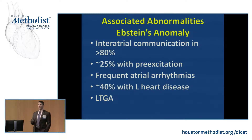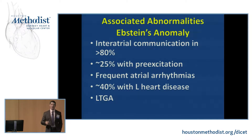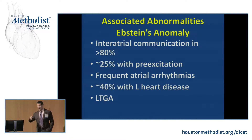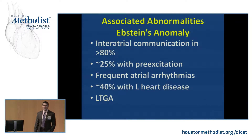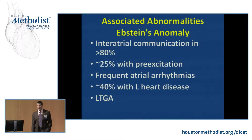In approximately 40% of cases, Ebstein's anomaly is associated with left heart disease, most commonly mitral valve prolapse or left ventricular non-compaction. The left ventricular non-compaction is specifically associated with myosin heavy chain gene mutations. Ebstein's anomaly is also remarkably common in patients who have LTGA, or congenitally corrected transposition of the great vessels — likely because whatever genetic abnormality predisposes patients to LTGA goes along with it.